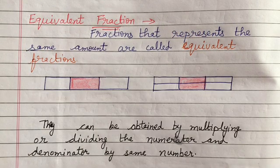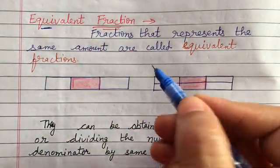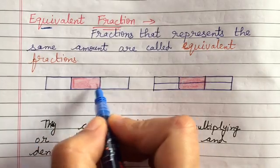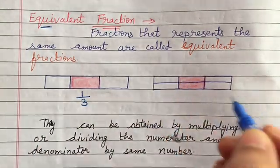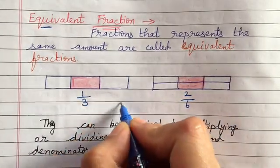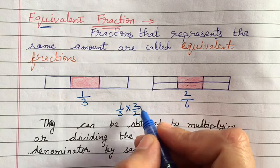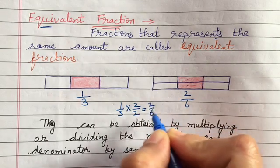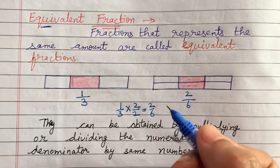Next: what is an equivalent fraction? Equivalent means which is equal, which seems to be equal — fractions that represent the same amount. For example, 1 is colored and total are 3, so the fraction is 1 by 3. And another shape: 2 are colored and total are 6, so 2 by 6. So 1 by 3 and 2 by 6 are equivalent fractions — they both represent the same amount.